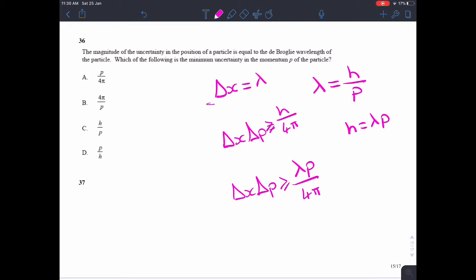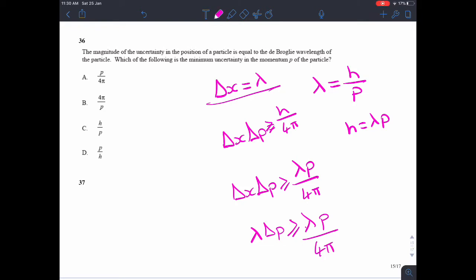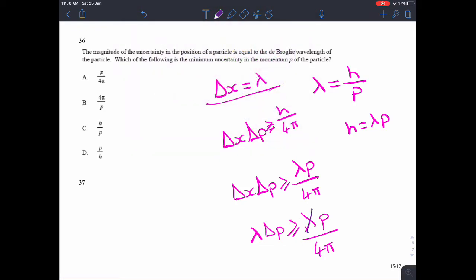So all we need to do is do a little bit of shifting around. So h equals lambda p. So delta x delta p is greater than or equal to lambda p over 4 pi. And it says up here that delta x is lambda. So lambda delta p is greater than or equal to lambda p over 4 pi. The wavelengths can cancel. And so what we're trying to find, we're trying to find the minimum uncertainty in the momentum p. So the answer is p over 4 pi, answer A.